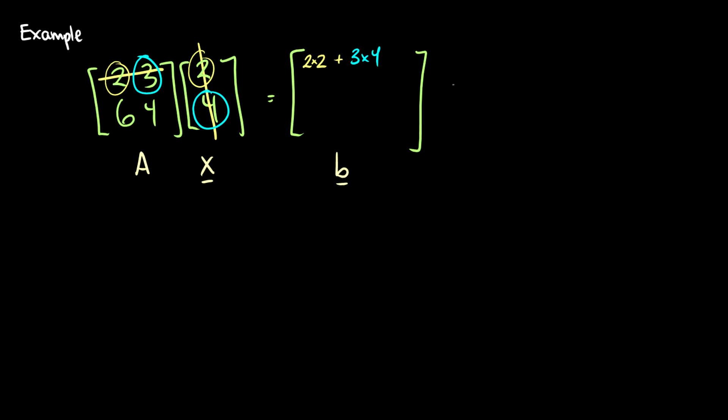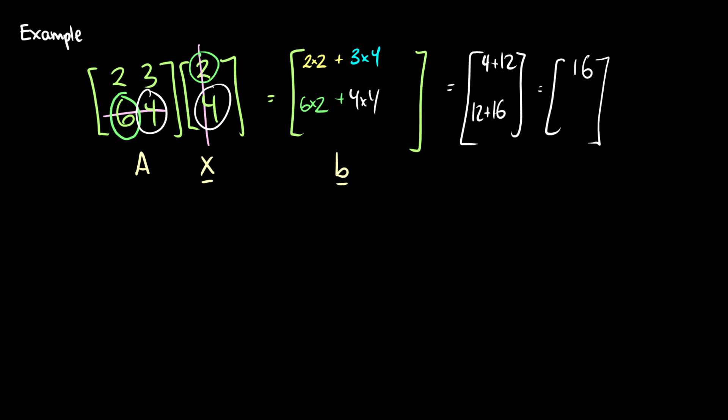That's going to give us 2 times 2 is 4 plus 3 times 4 is 12, so our first entry is 16. Now let's do the second one. We start off with the second row of A and the column x. For our first one we take 6 times 2, so that's 6 times 2. Then we add 4 times 4. In this case we get 12 plus 16 which equals 28.